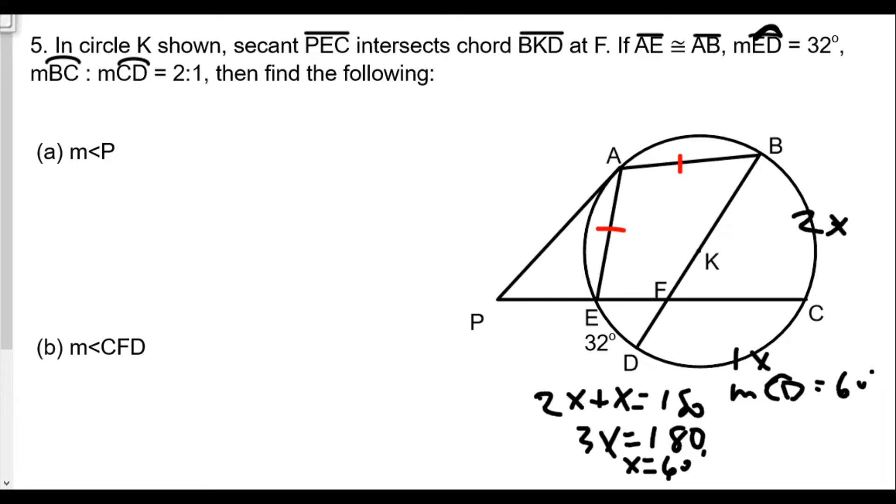That would mean in this case the measure of arc CD is equal to 60 degrees, and the measure of arc BC is going to be 2 times 60, so 120 degrees. That'll probably be helpful to us later on when we start doing other work with the angles. The first question is we want to find the measure of angle P. We need to find arcs ABC and AE.